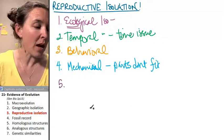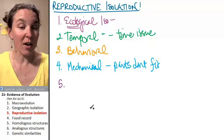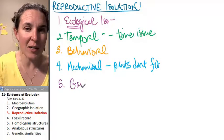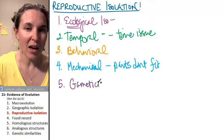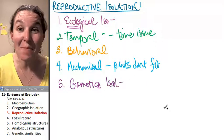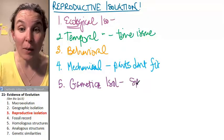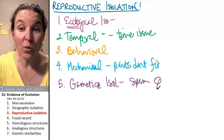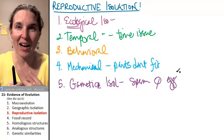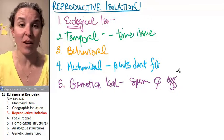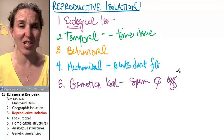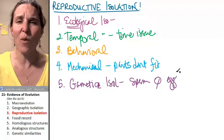Okay, how about sometimes the parts will fit, but then there's something called gametic. Oh, that's gametic isolation. And that means the sperm don't like the egg. So they're not going to combine. Sperm and egg are actually incompatible with each other. Maybe the sperm can't find the egg.